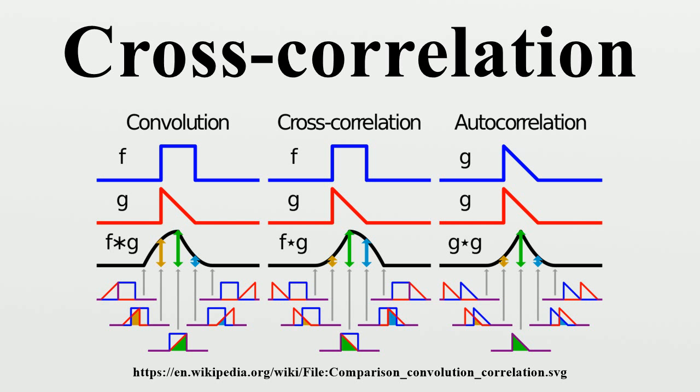For image processing applications in which the brightness of the image and template can vary due to lighting and exposure conditions, the images can be first normalized. This is typically done at every step by subtracting the mean and dividing by the standard deviation. The cross-correlation of a template with a sub-image is, where is the number of pixels and is the average and standard deviation of f.